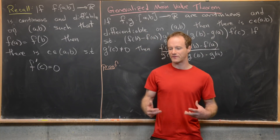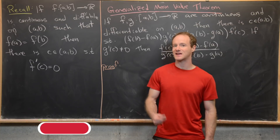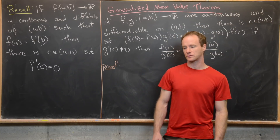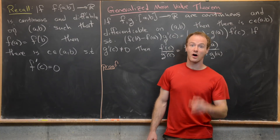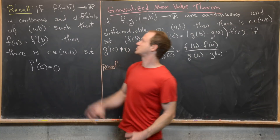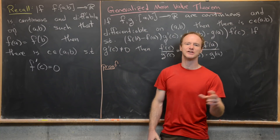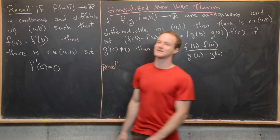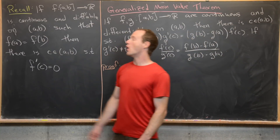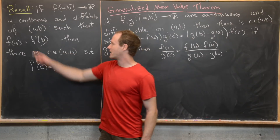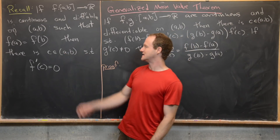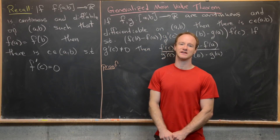We're continuing to look at differentiable functions and the properties they satisfy, looking at the generalized mean value theorem and L'Hôpital's rule. First, let's recall Rolle's theorem, which we proved in the last video: if f on the closed interval [a, b] is continuous on that entire closed interval and differentiable on the open interval (a, b), satisfying f(a) = f(b), then there exists a c in (a, b) such that f'(c) = 0.